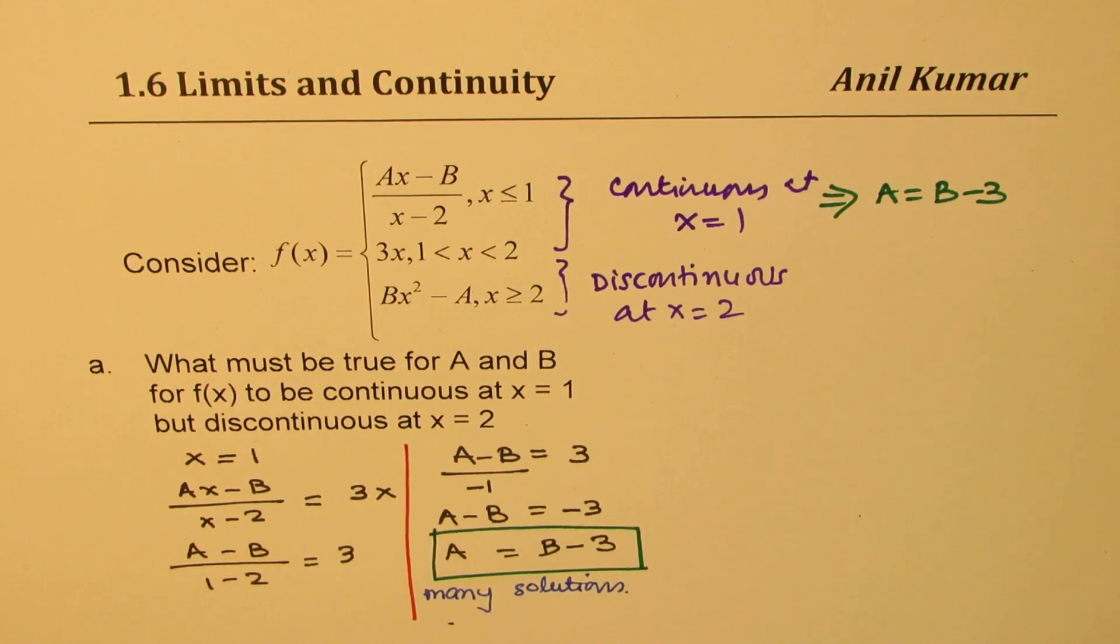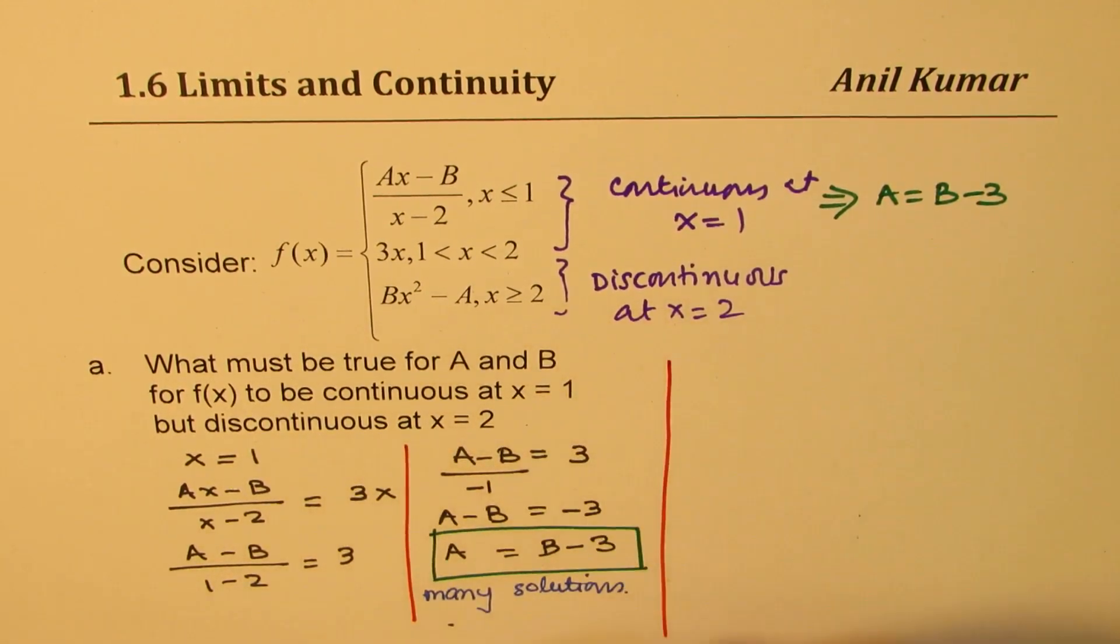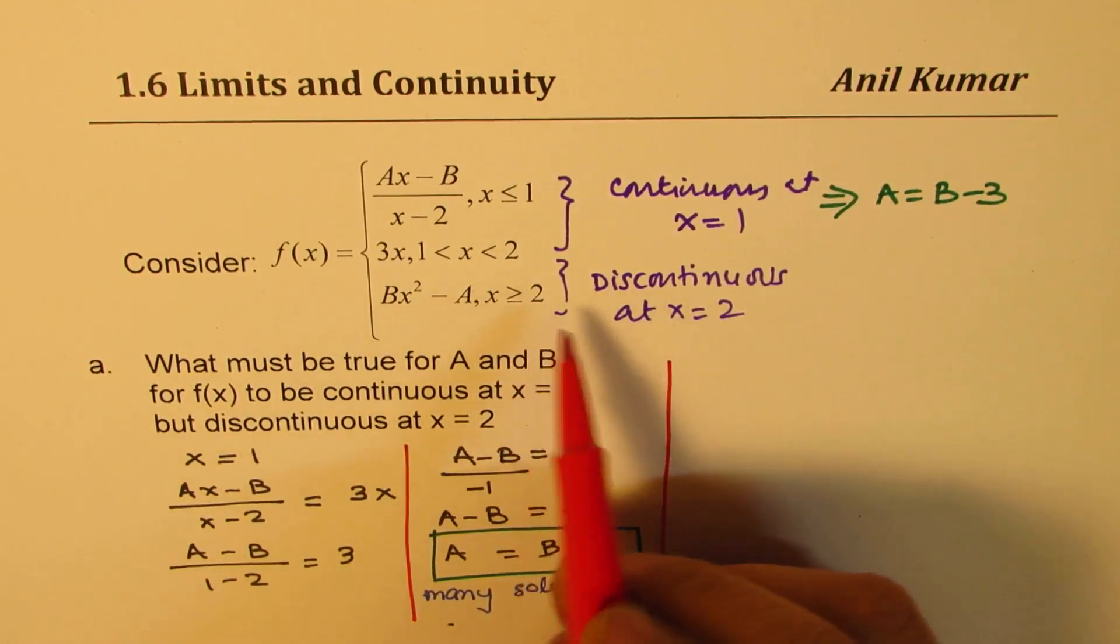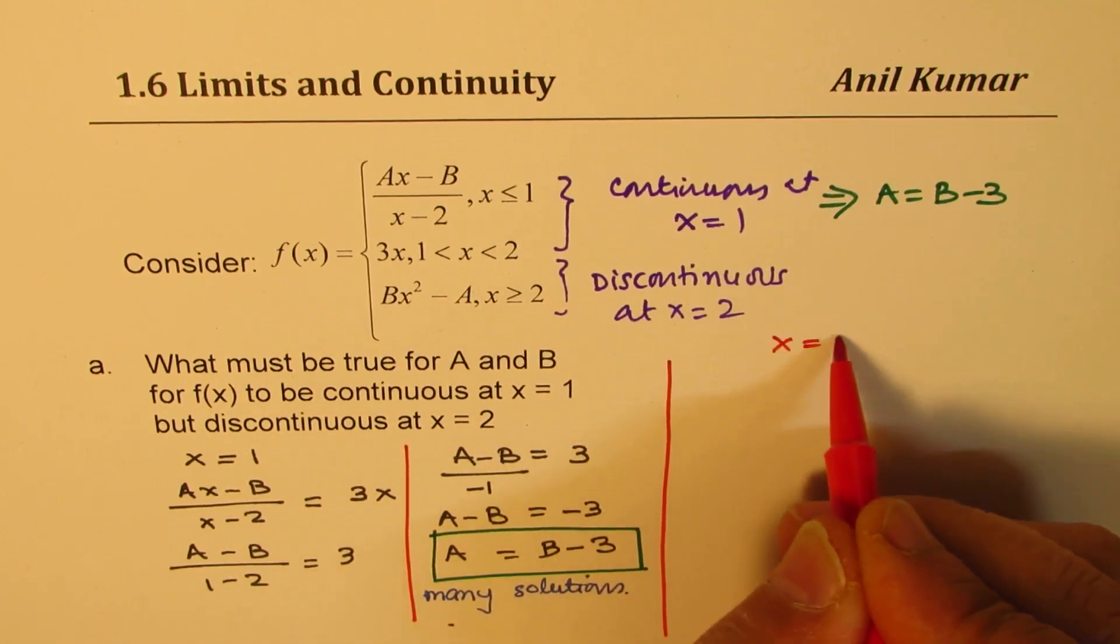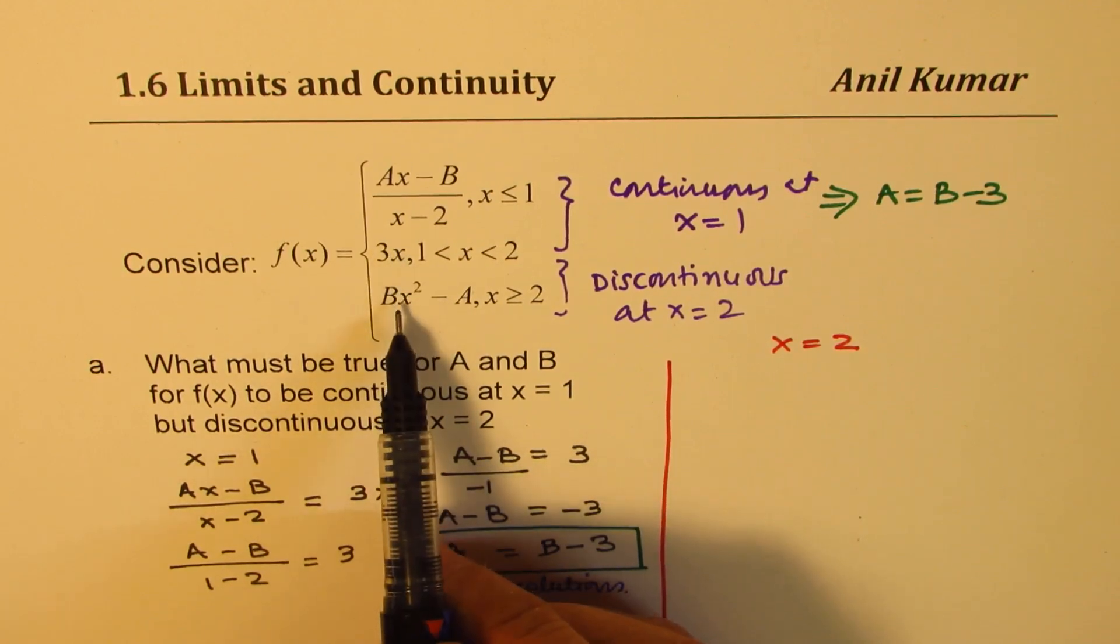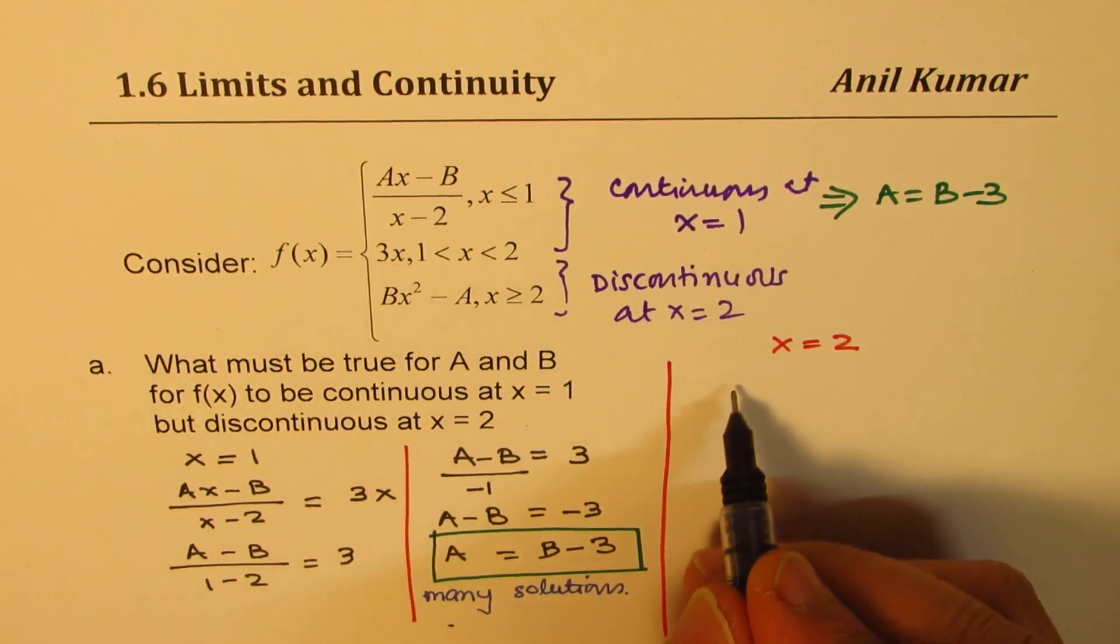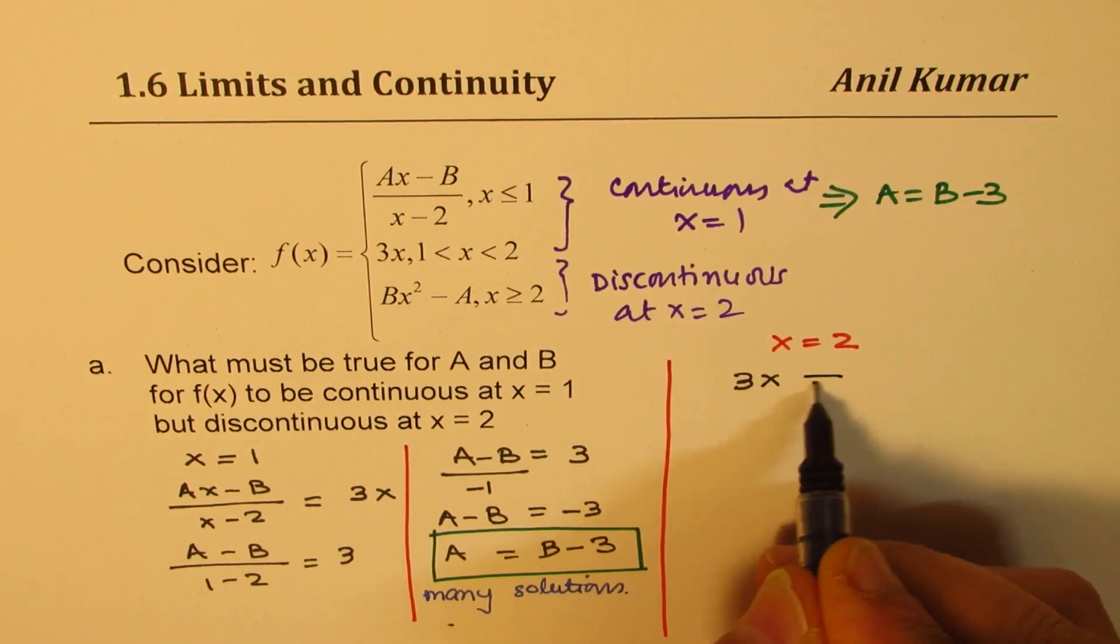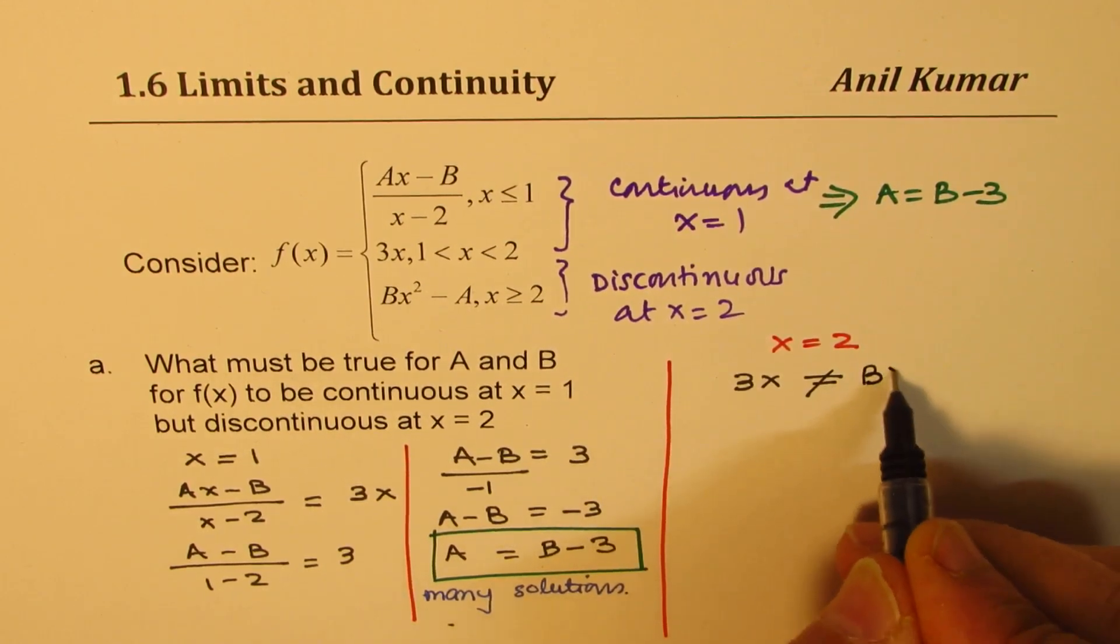And that is how they are related, so that will make the function continuous. Now for making discontinuous functions, what should be the condition? We'll analyze at x equals 2. So at x equals 2, these two points should not meet. So we have 3x, that means 3x should not equal Bx squared minus A at x equals 2.